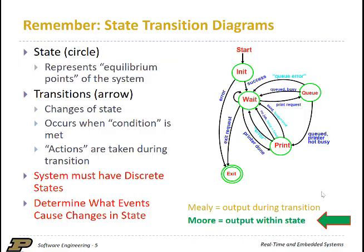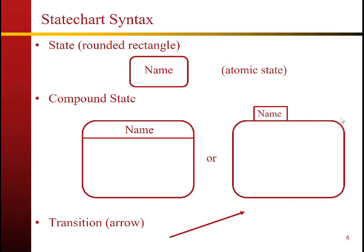This example here is Mealy because the outputs, shown in cyan (light blue), are specified and tied to the transitions. Mealy and Moore are theoretically and provably equivalent. For state chart syntax, instead of using a circle for a state, we use a rounded rectangle for the state name. States can contain states, leading to the idea of a compound state. If it's a basic state that can't be divided anymore, we call that an atomic state. If it's a container of substates, that is a compound state. Transitions are arrows, just like in finite state automata.